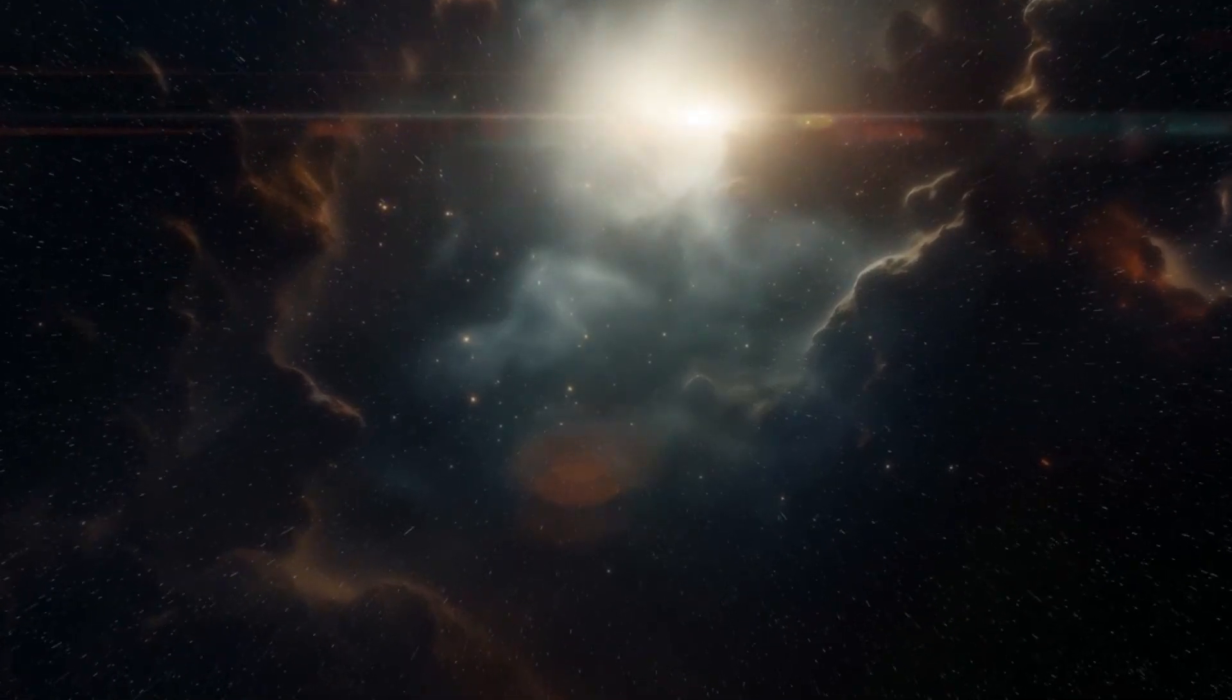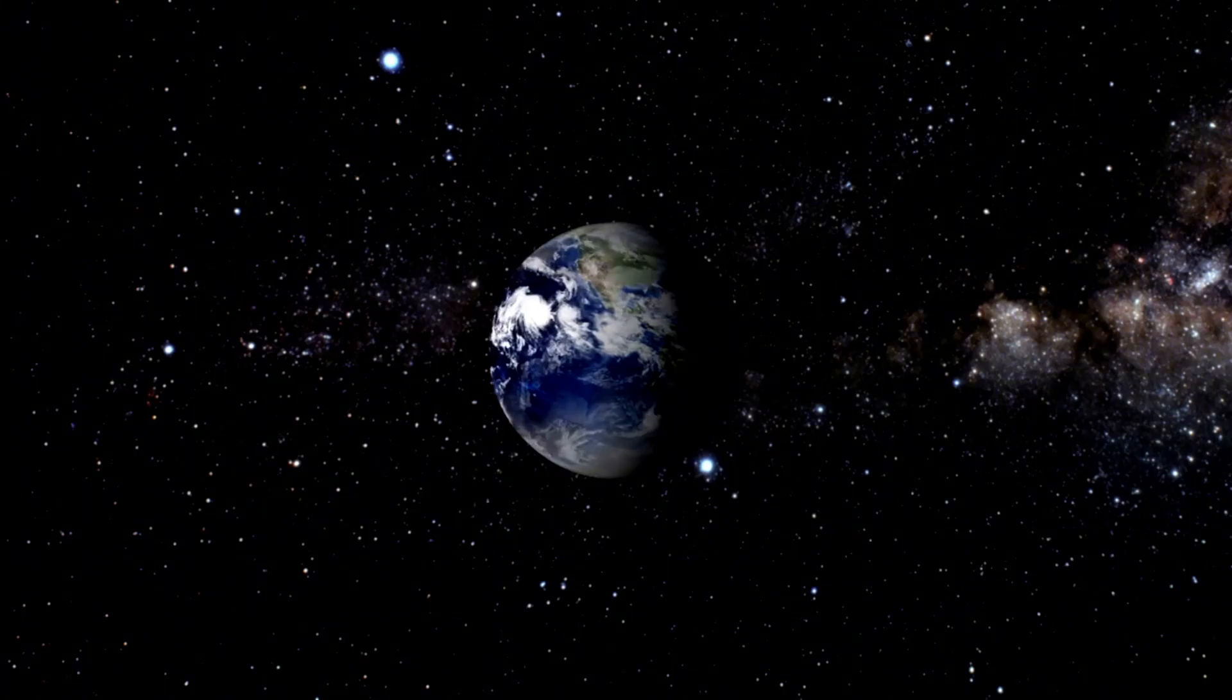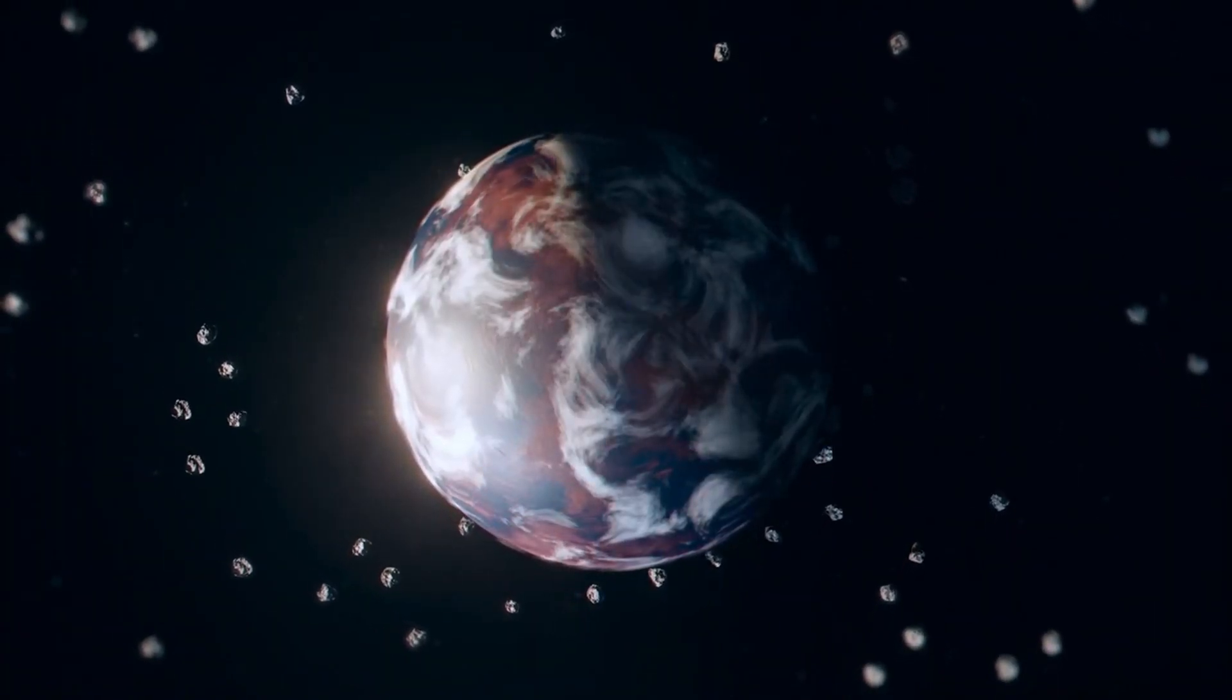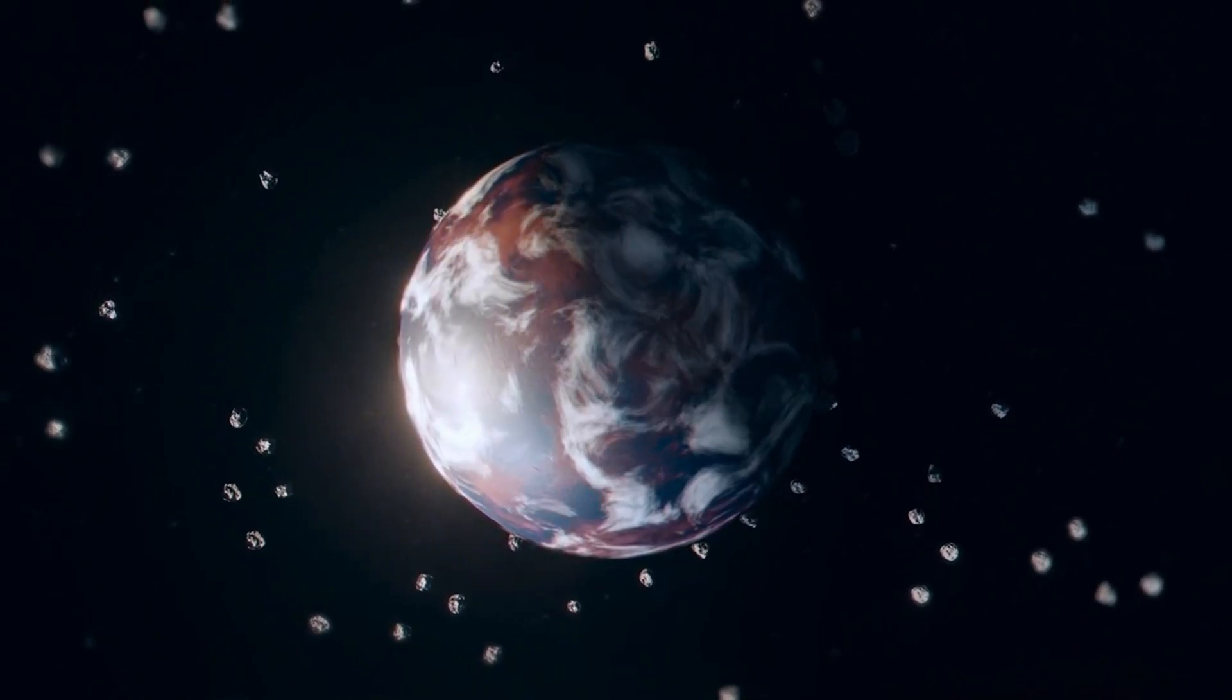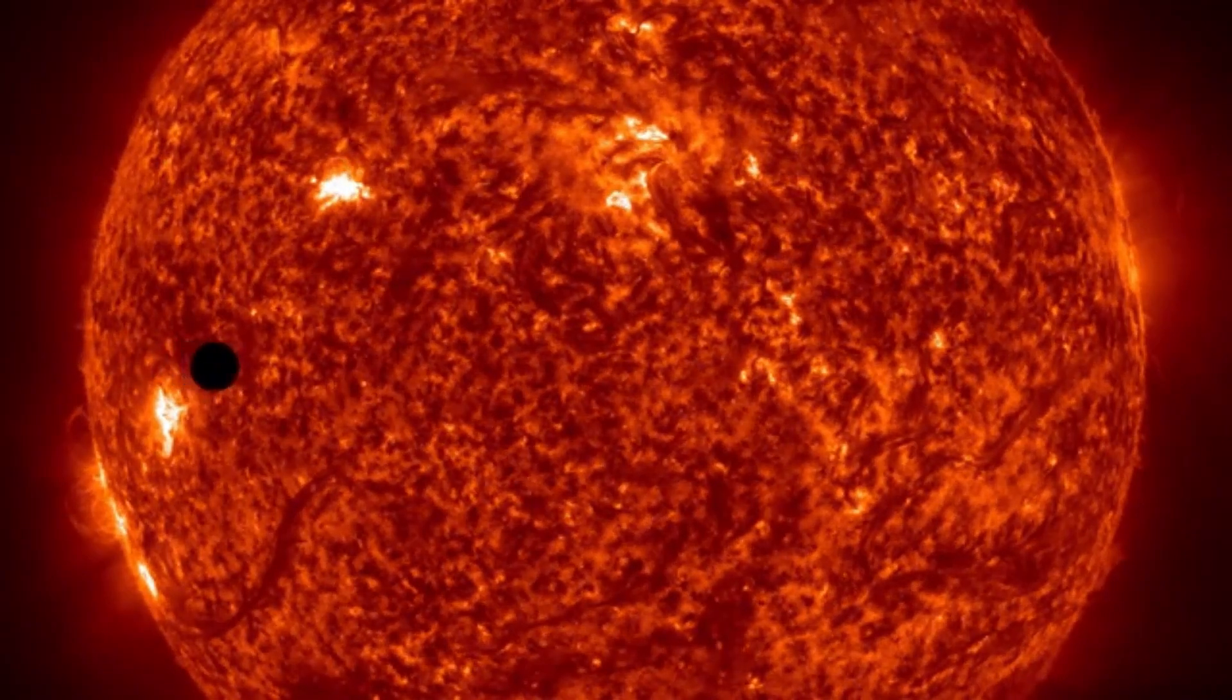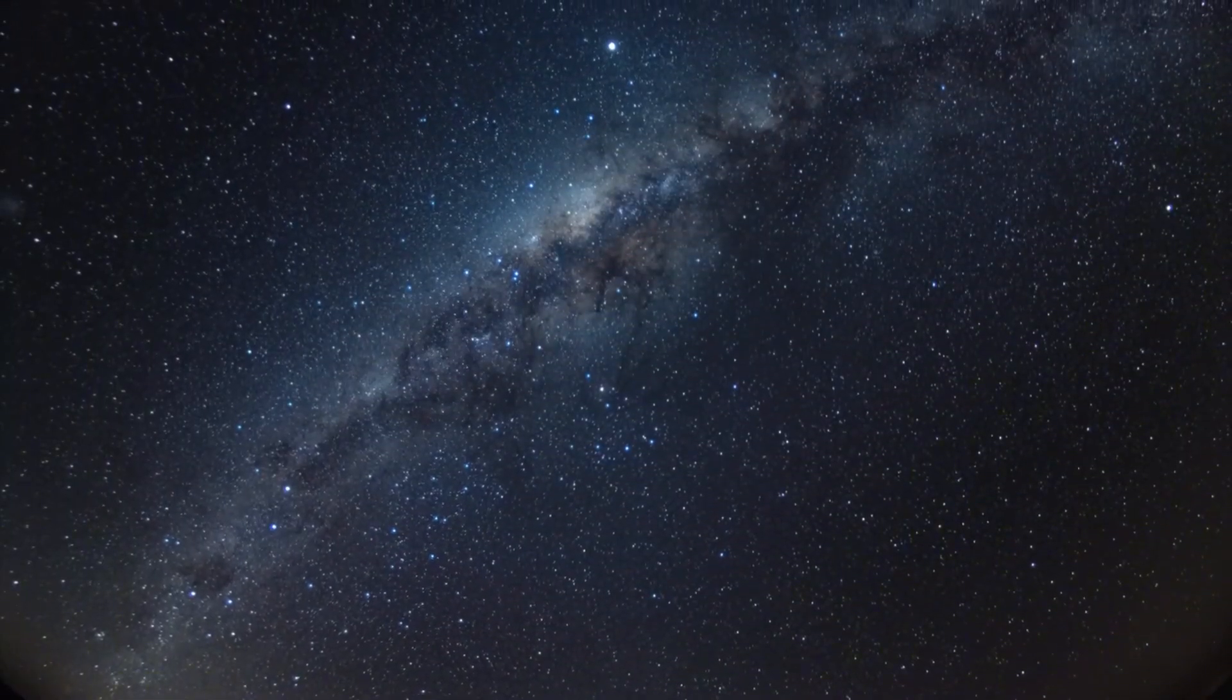Super-Earths could bewilder you, but don't stress. This text will settle all your burning questions. Super-Earths are a class of planets that are more significant than Earth but lighter than ice giants like Neptune and Uranus. They are genuinely one-of-a-kind. They can be made of gas, rock, or even a mix of both, and their sizes can fluctuate from twice the size of Earth to a few times its mass.